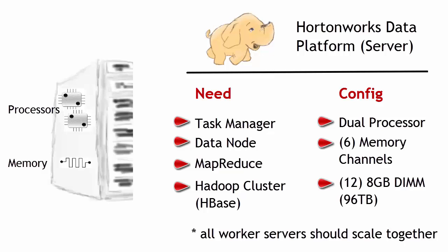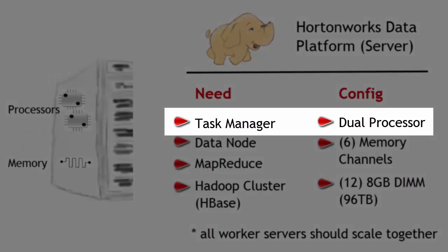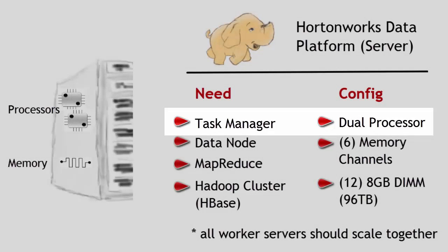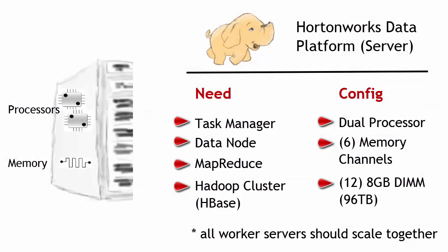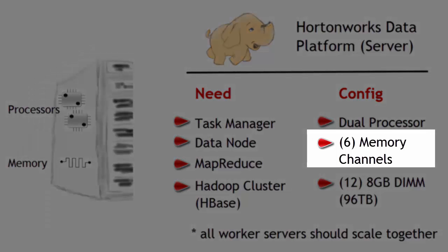Let's review some of the key components we want to have. First of all, the optimal configuration seems to be a dual processor machine — this is for price point as well as performance. We want to make sure that dual processing machine has three memory channels per processor, since a memory channel is assigned to an actual processor, giving six total memory channels on the server. So two processors, six memory channels.